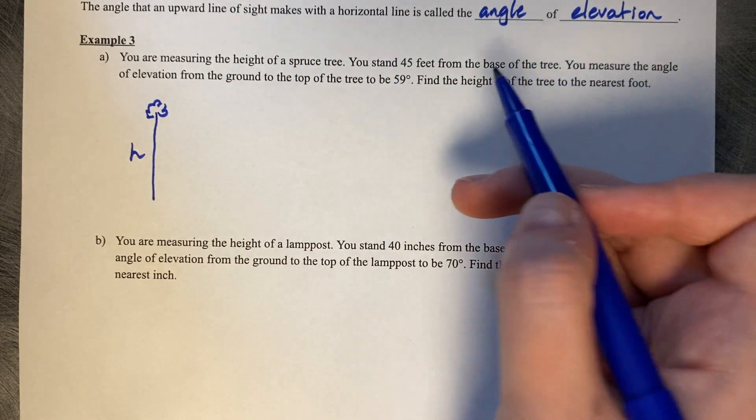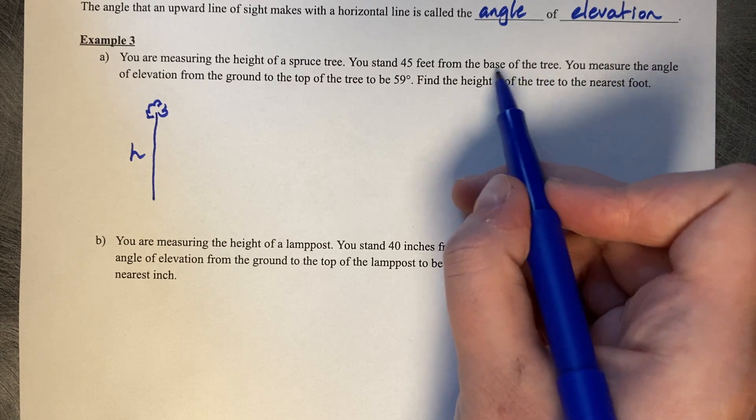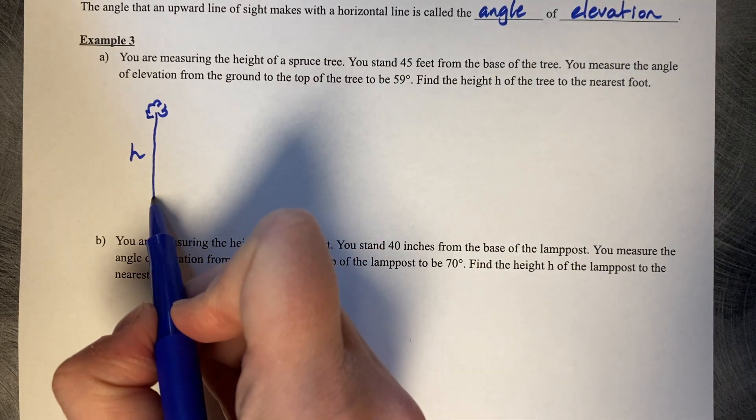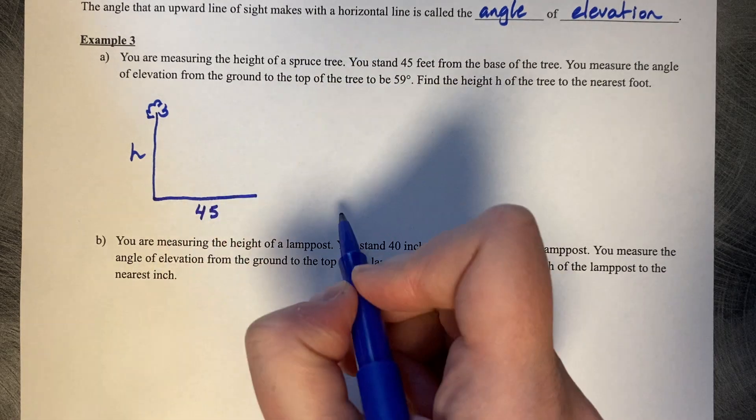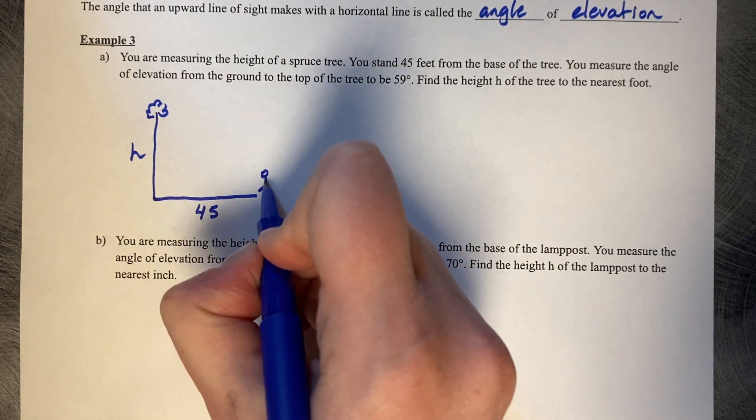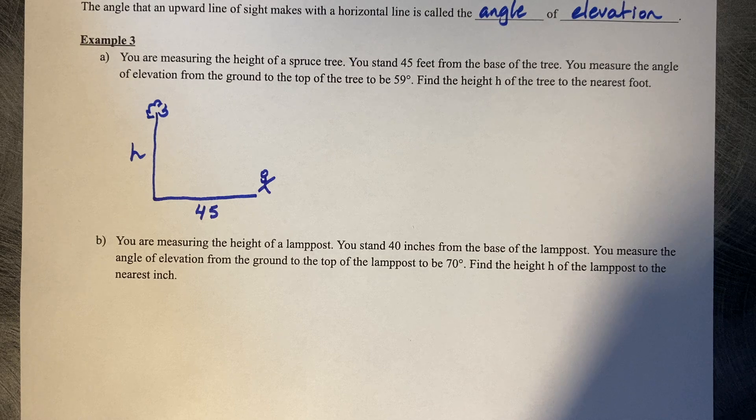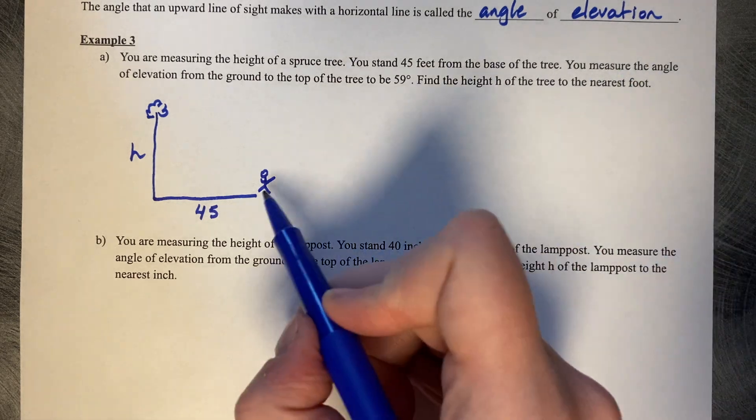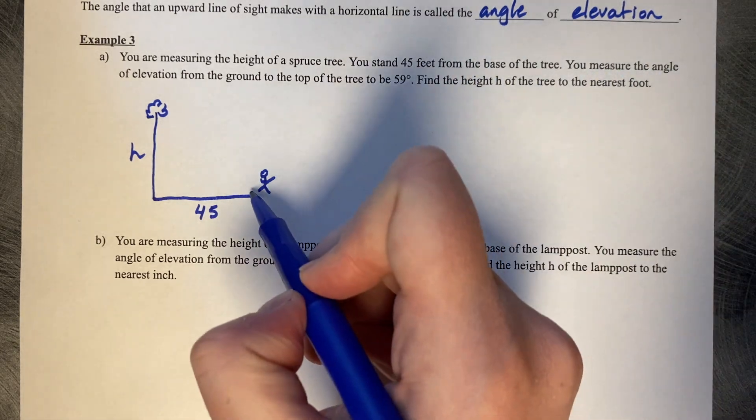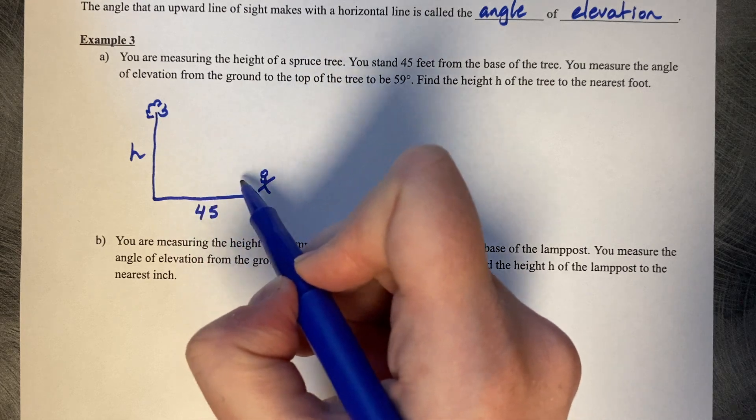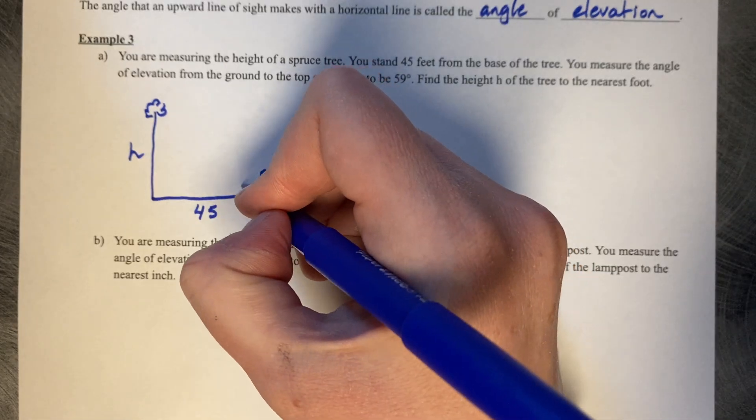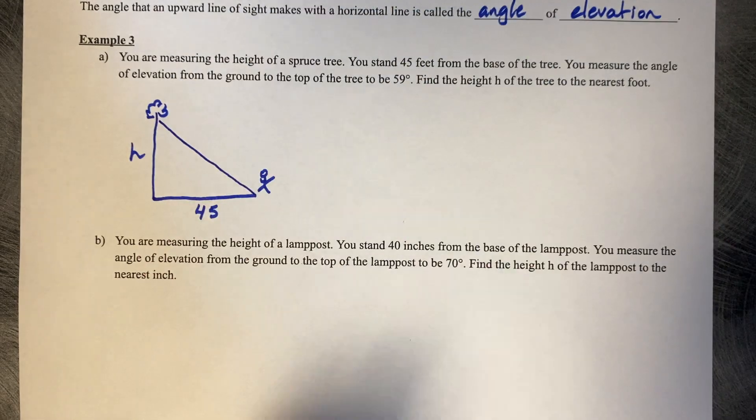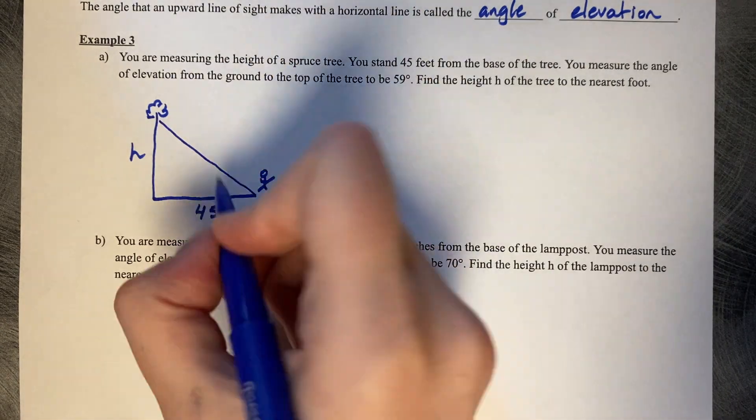You, a person, stand 45 feet from the base of the tree. Here's the base of the tree, and I am standing 45 feet from the base. You measure the angle of elevation, so that's the increased angle there, from the ground to the top of the tree.